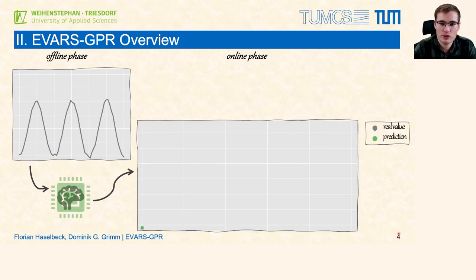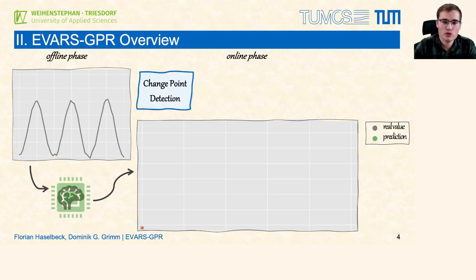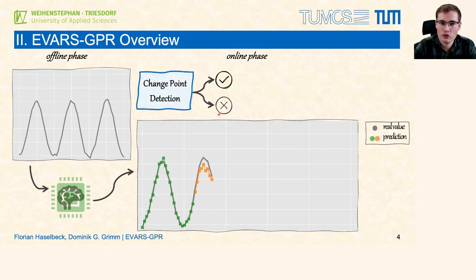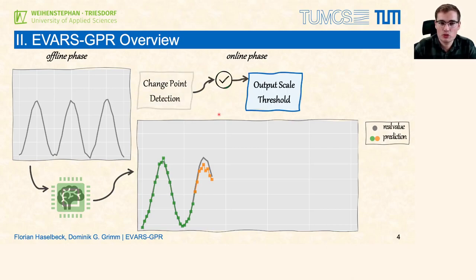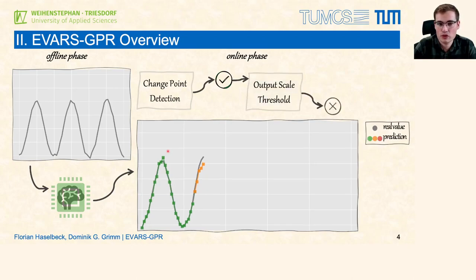But during the online phase EVOS GPR is different. First we predict the next target value. After each prediction we run an online change point detection algorithm to check for changing data distribution. If we do not detect a change point we continue with our current prediction model. At a certain time step we might detect a change point, but online change point detection algorithms are prone to false alarms. For this reason and also for efficiency, we included a check of the output scale. By doing so we set the values of the current season in relation to previous seasons, and if this deviation does not exceed a threshold we again continue with our current prediction model.